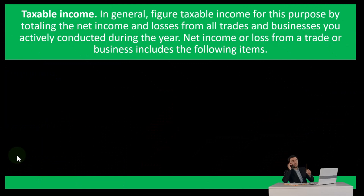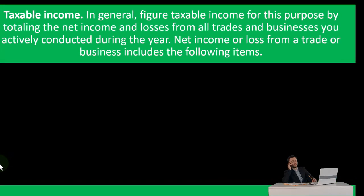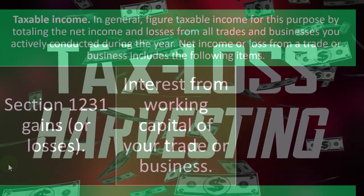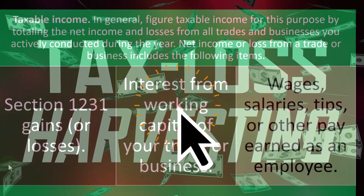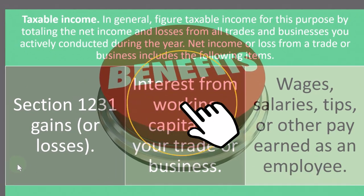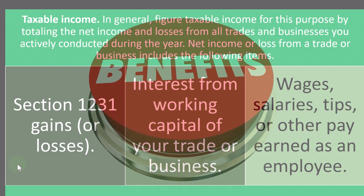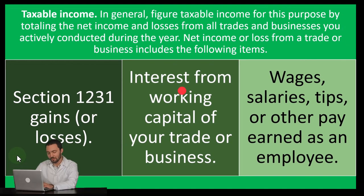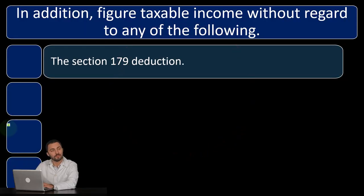Net income or loss from a trade or business includes Section 1231 gains or losses, interest from working capital of your trade or business, and wages, salaries, tips, or other pay earned as an employee. As a general rule, the IRS is skeptical of losses — they want to be your silent partner, sharing in the income but not the risk of losses. So losses may be subject to limitations in many areas of the tax code.